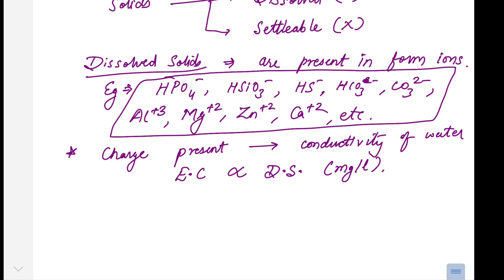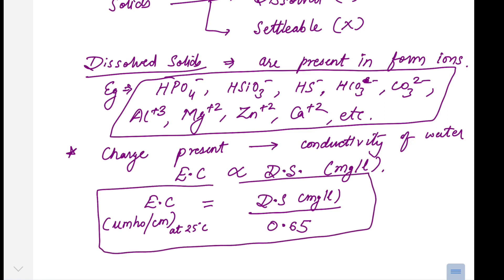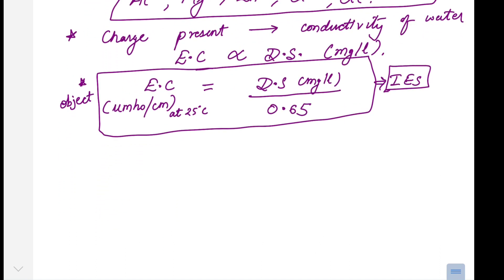Suspended solids were measured in milligrams per liter, so dissolved solids also use the same unit: milligrams per liter. From experimental observations, an empirical formula has been developed: electrical conductivity (in micro-mho per centimeter at 25°C) equals dissolved solids (in mg/L) divided by 0.65. This empirical formula is important for objective exams — it has been asked in IES exams in previous years.